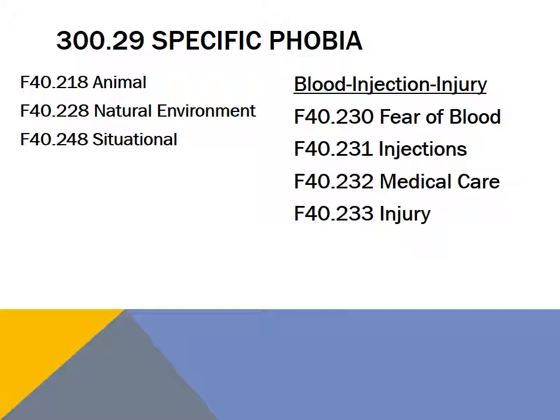If a person has one specific phobia, it is common for them to have multiple specific phobias. When more than one phobia is present, all of them are specified in the diagnosis. This is a partial list of the ICD-10 codings for specific phobias. With a DSM-5 diagnosis, the phobic stimuli are specified in the verbal portion of the diagnosis, and there are no different numerical codes for each type of phobia.